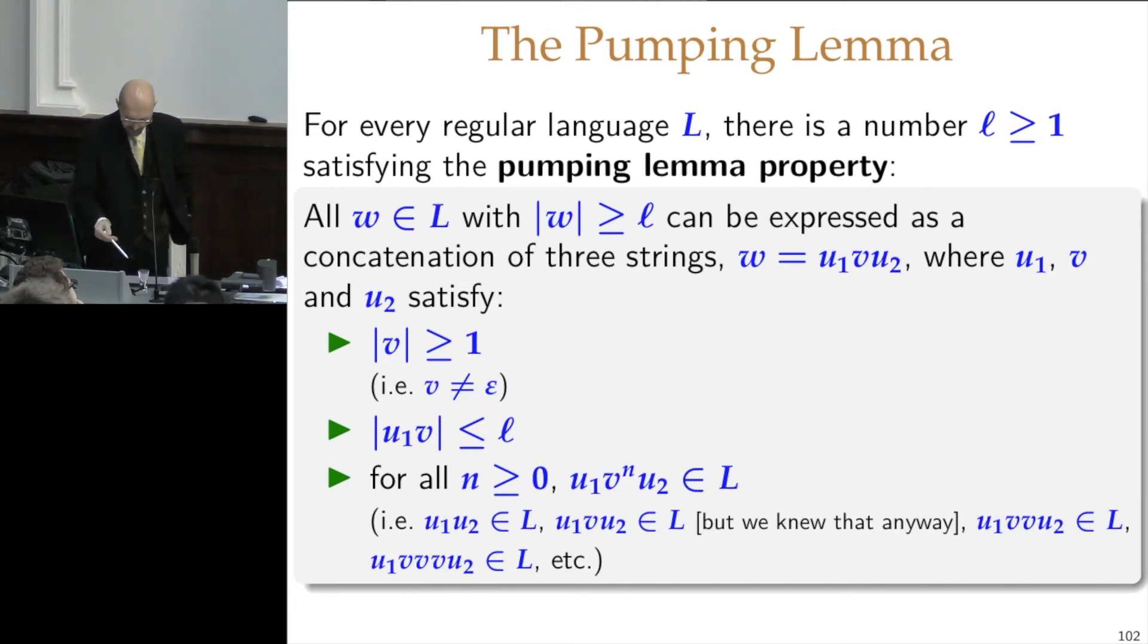So without v at all will be in the language. With v in the middle, well that was the original string. With v repeated twice will be in the language. With v repeated three times will be in the language. With v repeated a million times will be in the language. So out of that single W, I can generate a countable infinity of strings in the language just by repeating the middle part arbitrarily many times. I have to find the right middle part, but there exists, for every string W, there will exist a way to split it such that I can repeat the middle part as many times as I like, and everything will be in the language. And the reason for that is very cute.